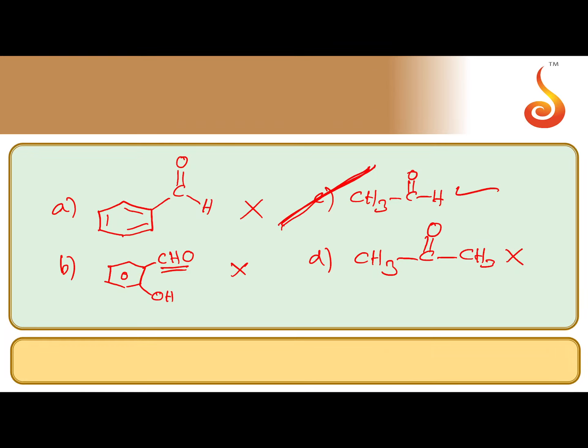Remember: Tollens' reagent can give a positive test with aromatic aldehydes, but Fehling's reagent cannot give a positive test with aromatic aldehydes. That you have to remember.